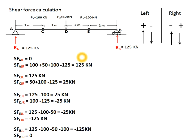At each point I will find two values of shear force — just left and just right — which will help us draw the shear force diagram easily. Sign convention: right-hand side upward is negative, downward is positive; left-hand side is the opposite. Shear force at A just left is zero. At A just right: three downward point loads are positive and the reaction 125 upward is negative, giving 100+100+50−125 = 125.